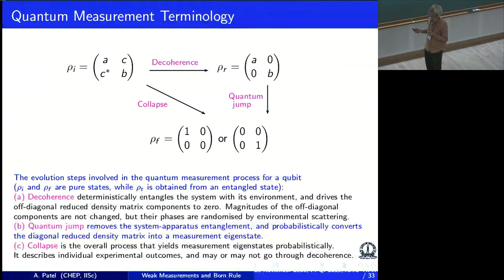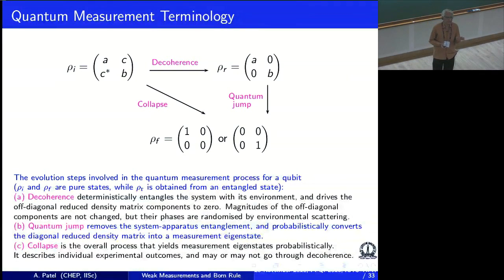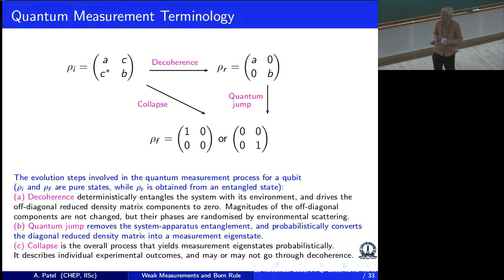The measurement actually requires a little more than that. You never observe this density matrix in the instrument; when you measure, you will either get one eigenstate or the other. This process is a jump. How do I get from this density matrix to that density matrix for a single copy? You can do it at the level of ensemble and Born rule, but how do I do it at the level of a single copy? This process is also described by the word collapse. Collapse may or may not go through decoherence, but it somehow ends up from one to the other.